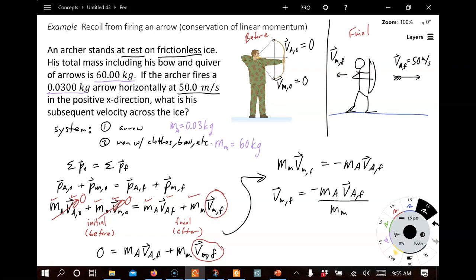And let's go ahead and plug in our numbers here. We've got a negative mass of the arrow, 0.03 kilograms, times the velocity of the arrow final, 50 meters per second. That's a positive. And, so, what is the velocity of the man final? Plugging that into the calculator, I get this answer here. A negative 0.025 meters per second.